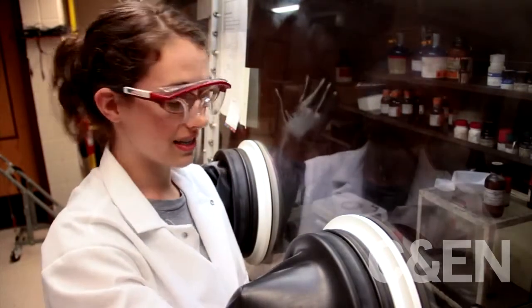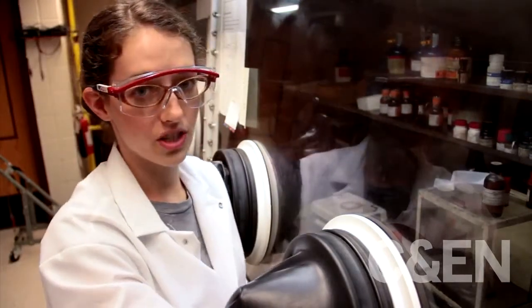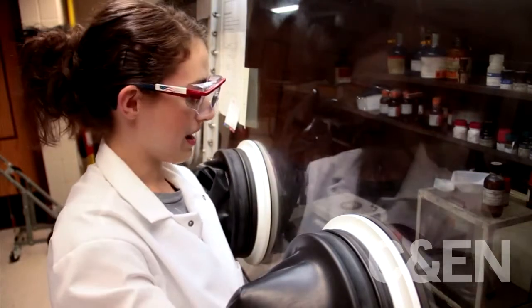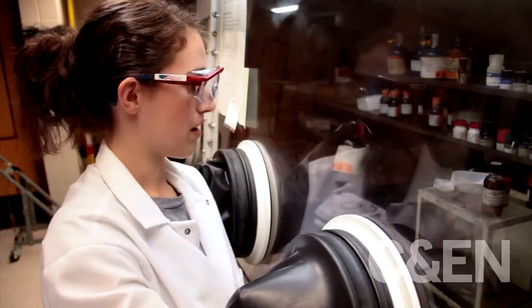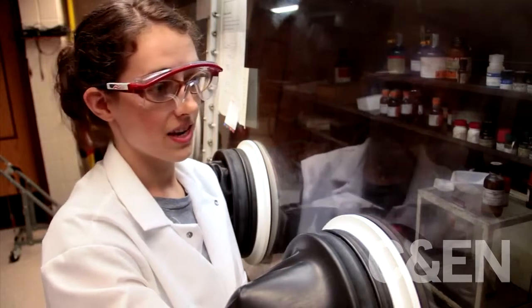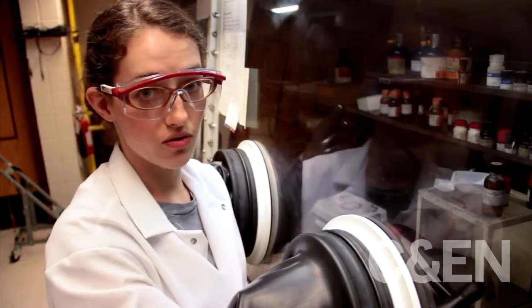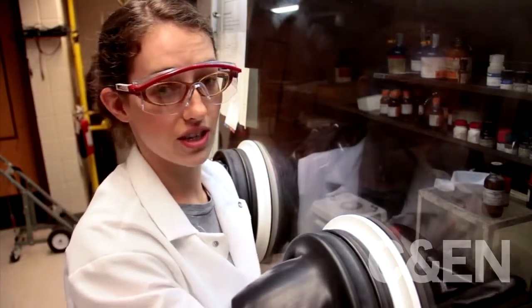So I'm getting two things in here. The first is selenium, which is in powder form. And then I'm going to dissolve that in tributyl phosphine. I'm going to take that, split it between two syringes, and head back over to do the injection.